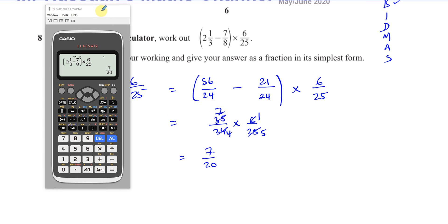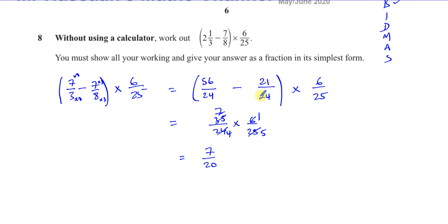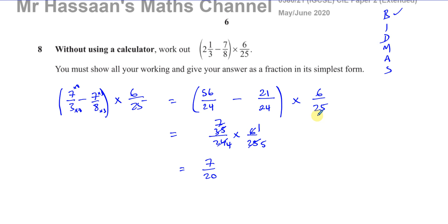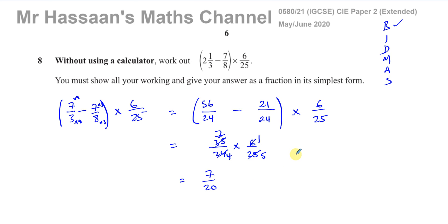You must show your steps: examiners want to see you making the denominators the same and simplifying by cross-cancelling before multiplying. This is especially important for those with 'calculatoritis' — you must know how to add, subtract, multiply, and divide fractions without a calculator, otherwise you'll lose these marks. The playlist for this paper and for basic arithmetic questions is linked below. Subscribe by clicking the link. Thank you for watching.